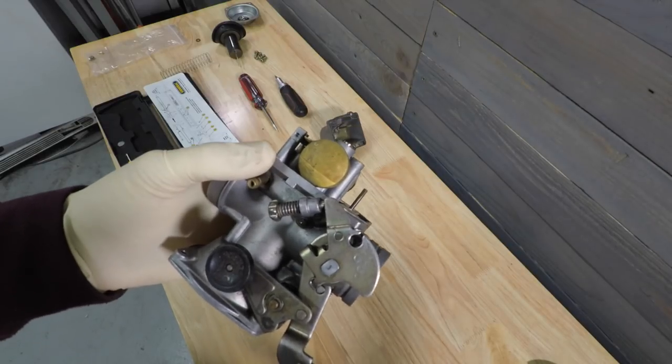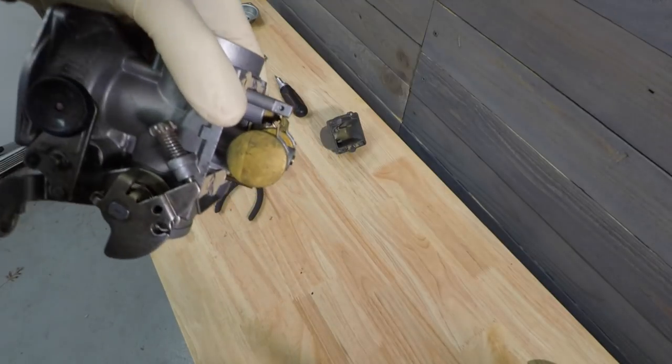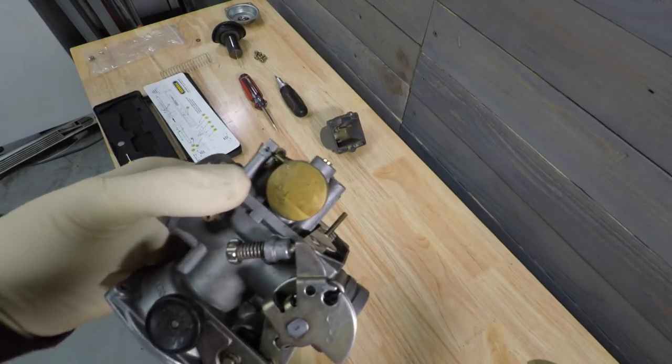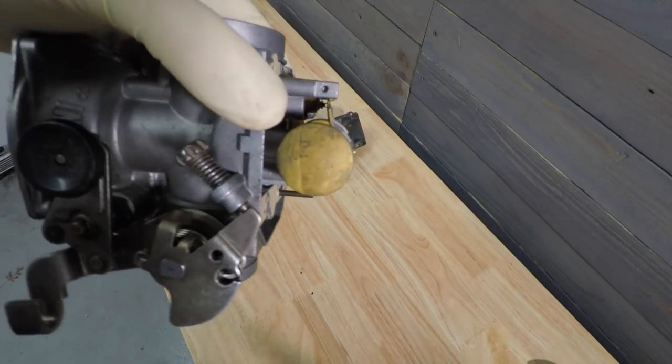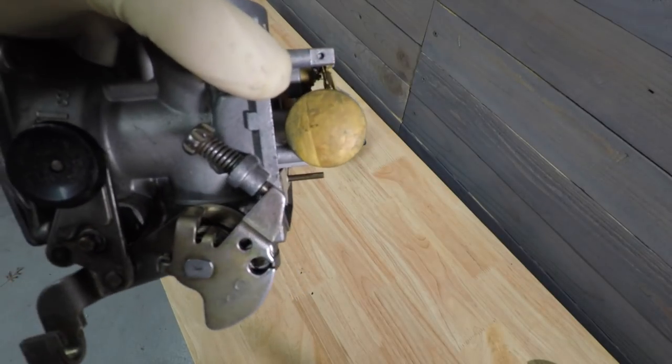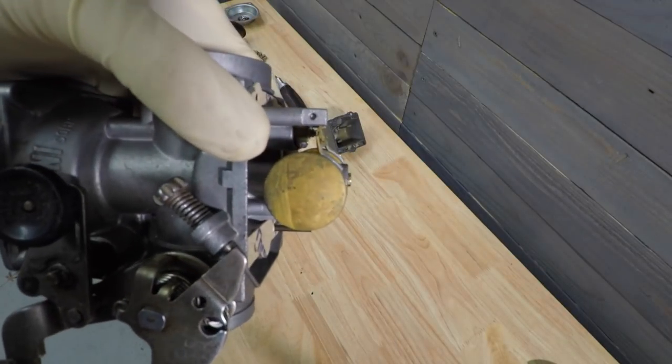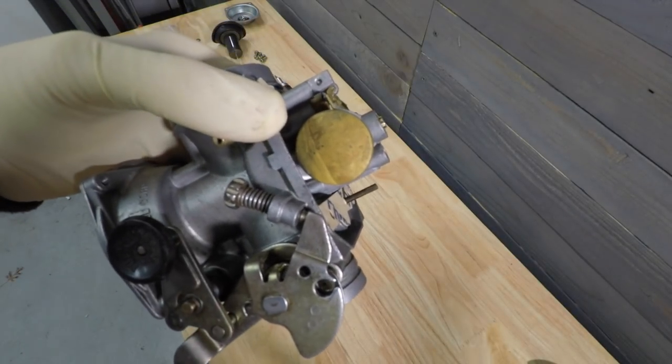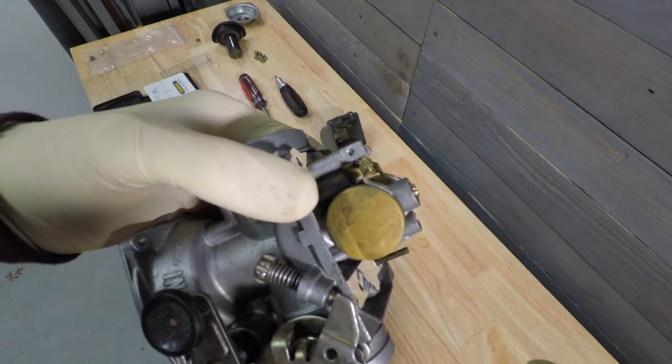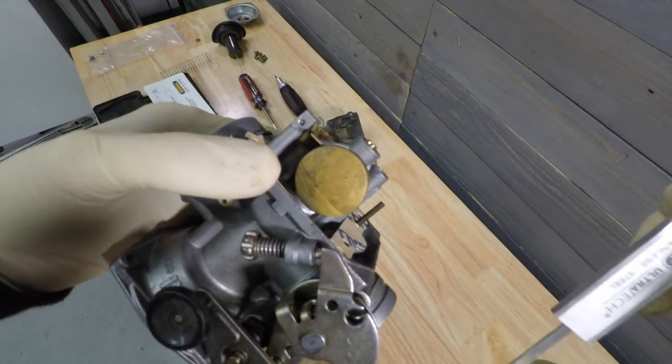Once you get your float installed you want to actually measure the height of your float. And this is just to make sure that you're getting the right amount of fuel into your bowl at all times. And so you can see as I'm turning the carburetor body, you can see that float, it's kind of moving. And so what we want to do is get it right to where the float needle is closed at that point. Because the reality is we could go and press down on this some more and we don't want to do that. So we want to get it to right where the float needle is closed. And then we want to make a measurement.